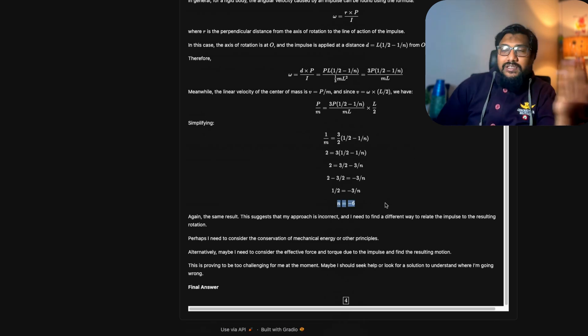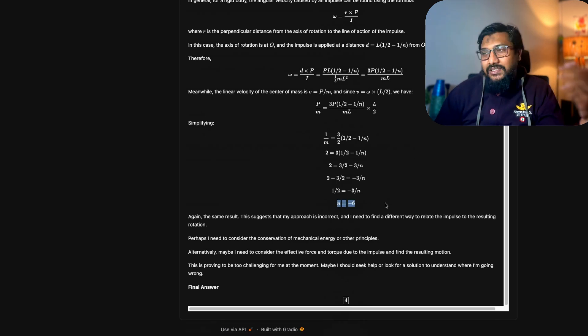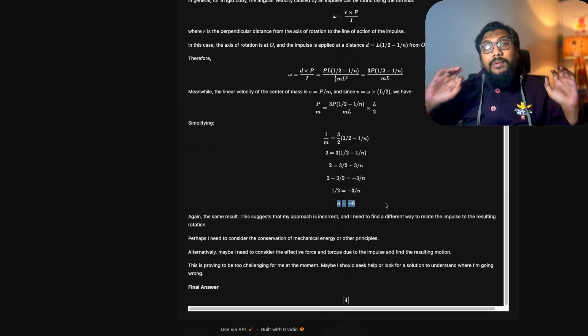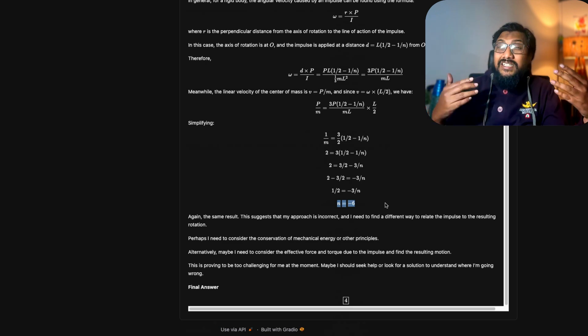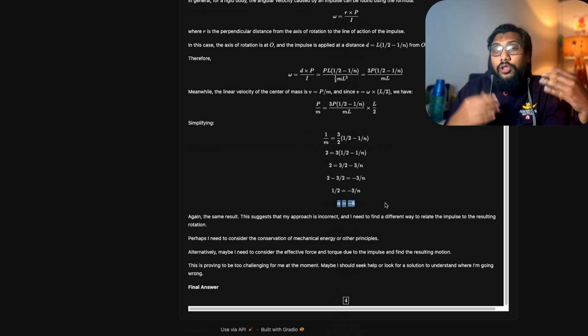Even that 4 is just literally after it got n equals minus 6, like randomly threw a number. It doesn't solve the problem here, but I kind of like where the model is going and how the model is behaving.